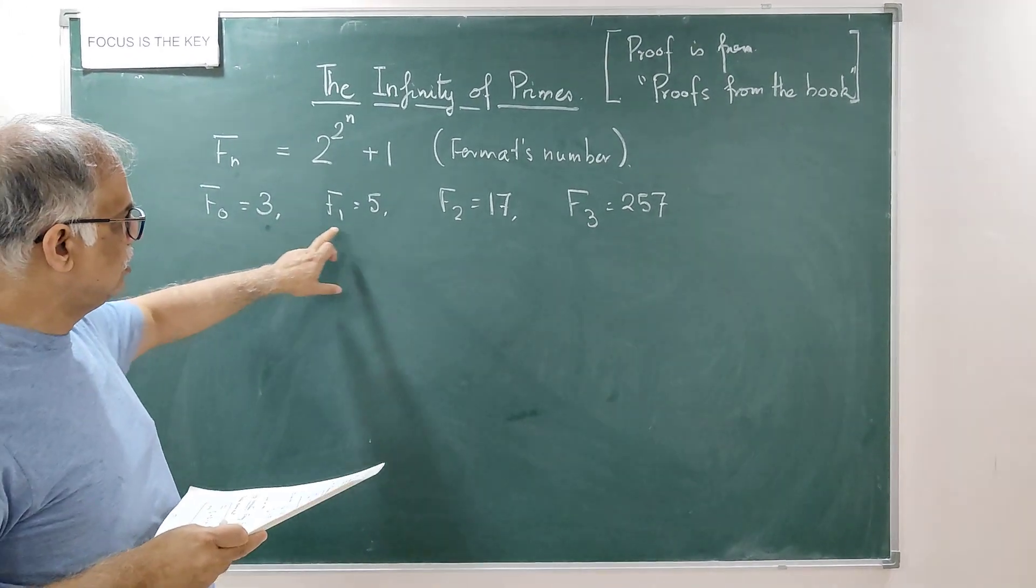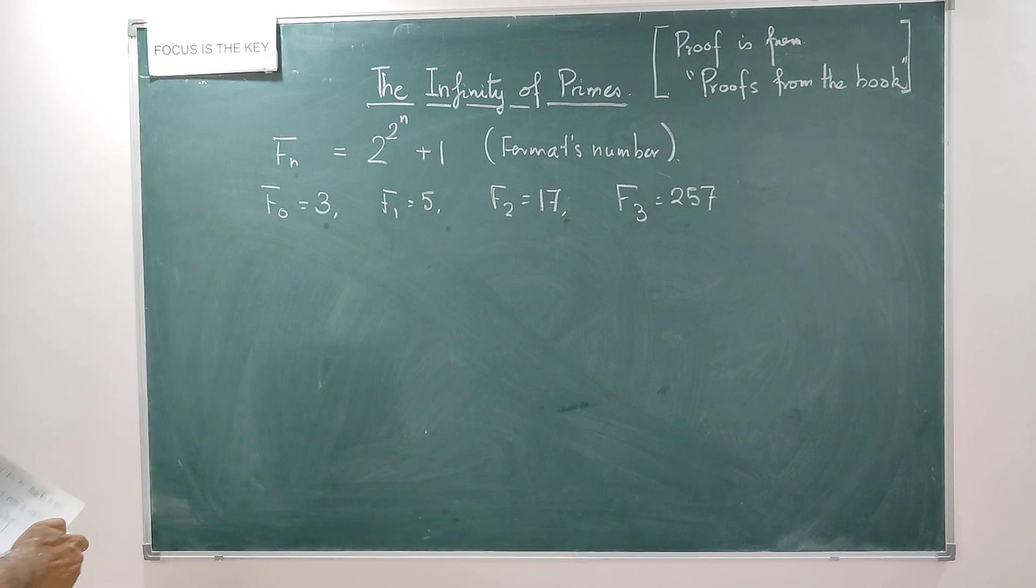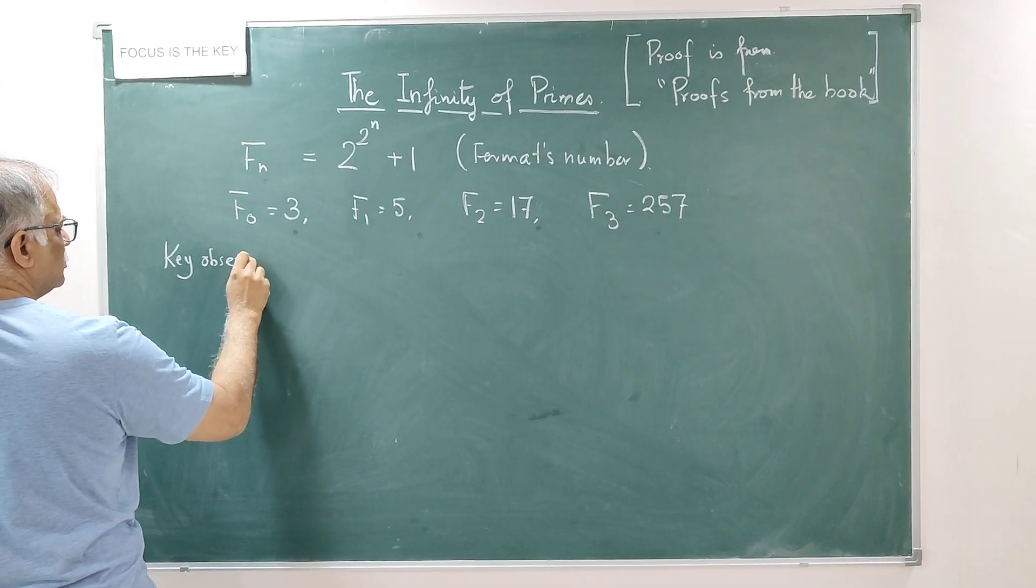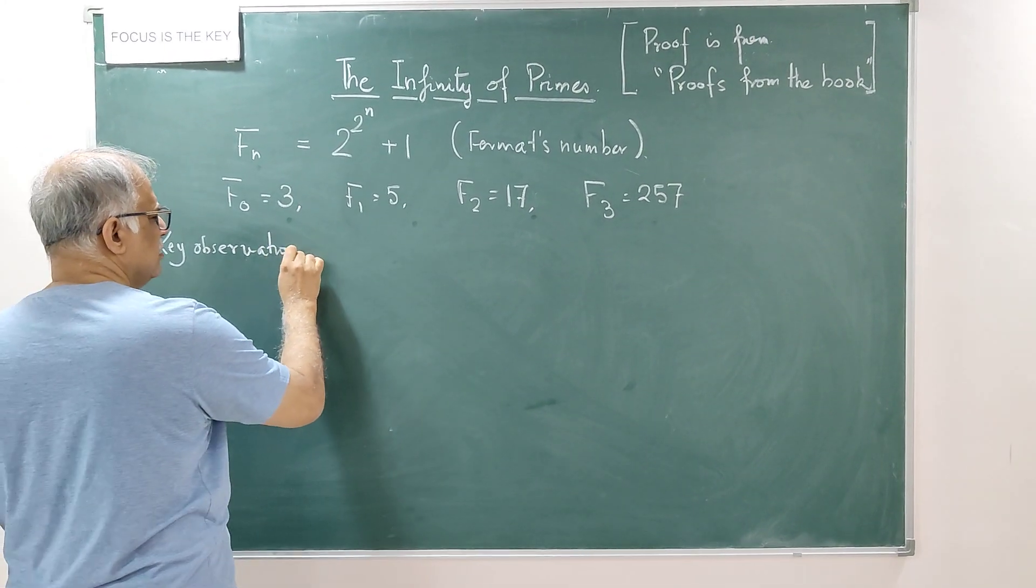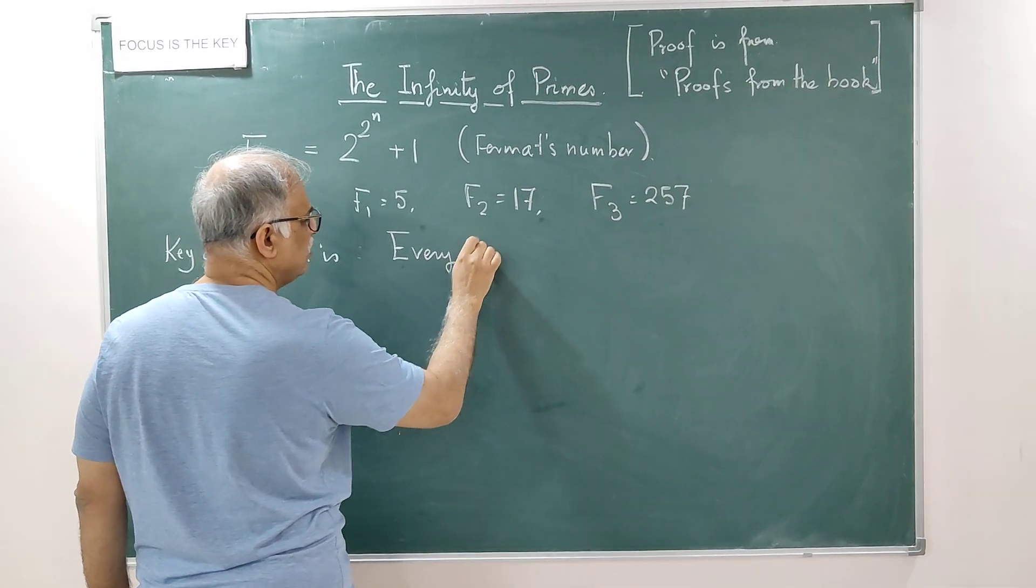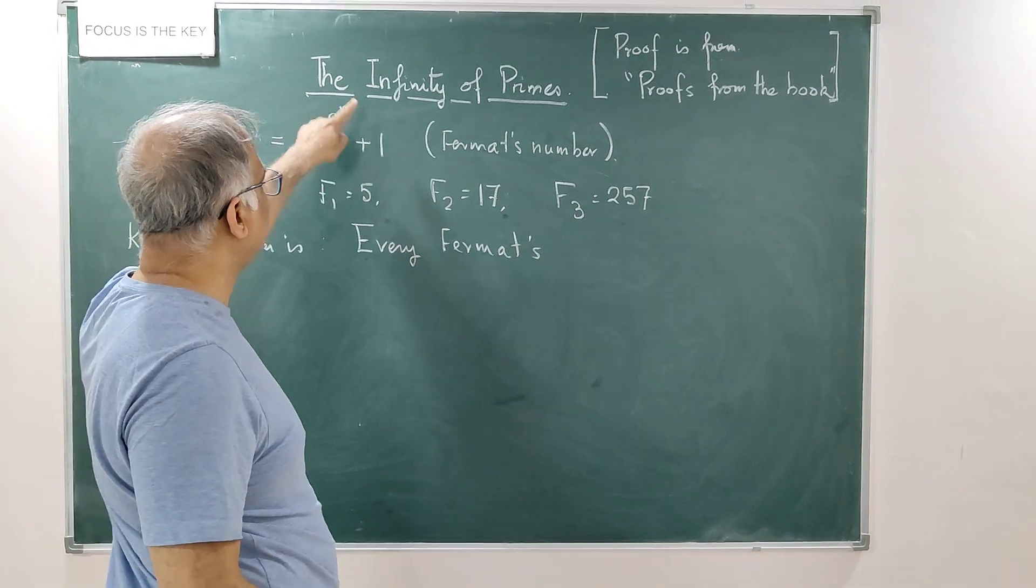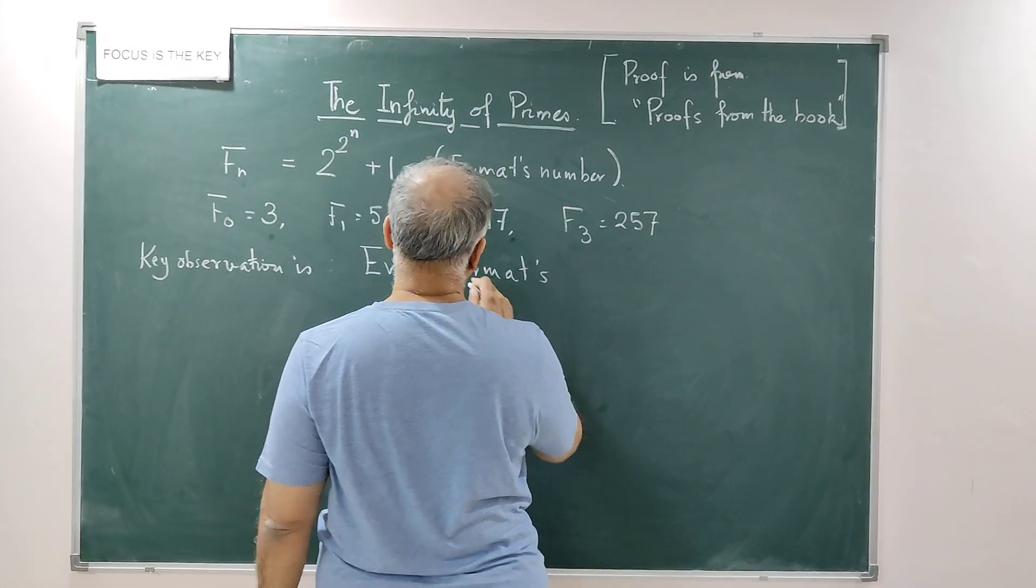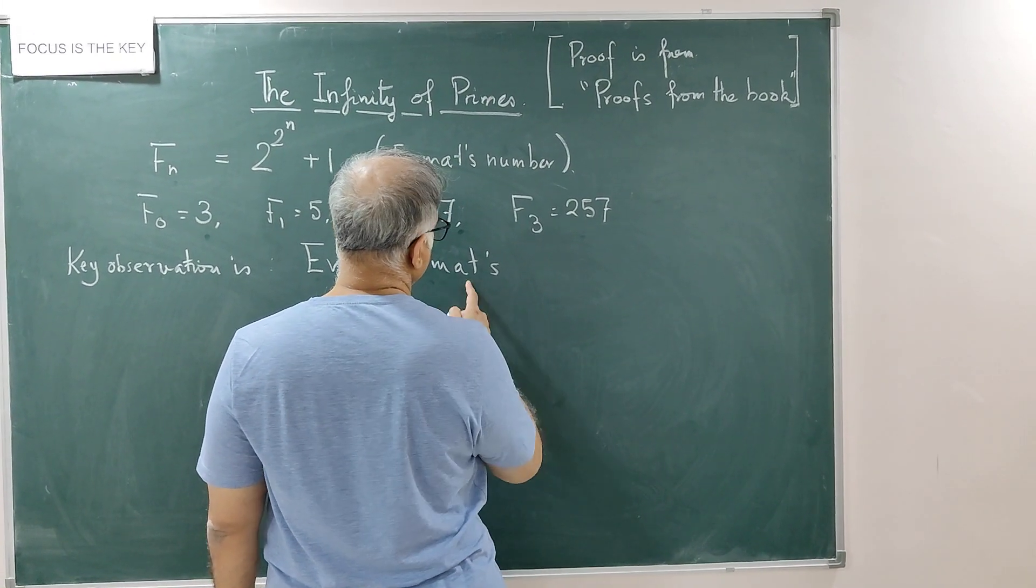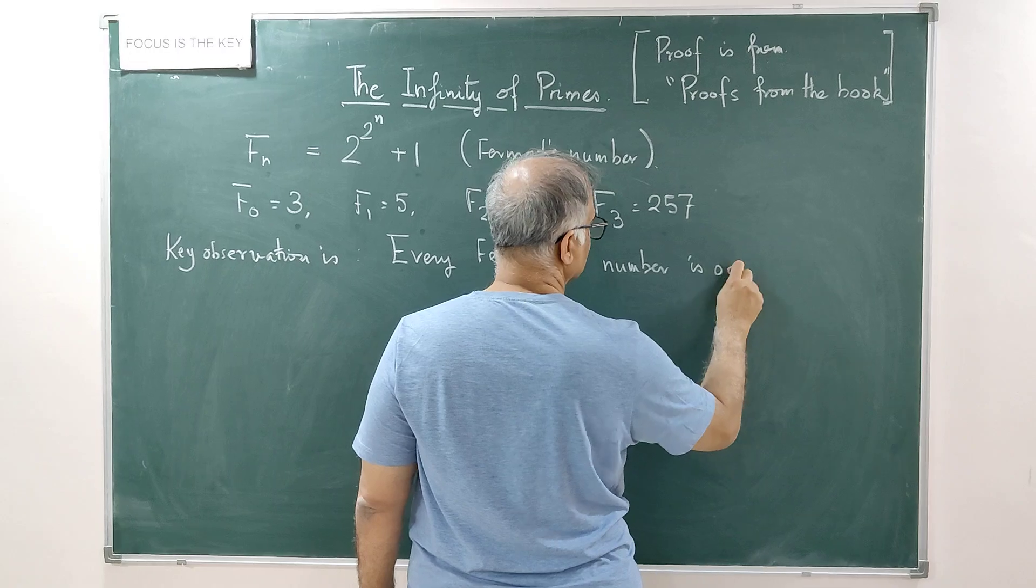You see all these numbers are odd, these kind of odd numbers. So what is the key observation? The key observation is every Fermat's number is odd. It is very natural because this will be an even number plus 1, so it will be an odd number. This is always even, 2 to the power of n.